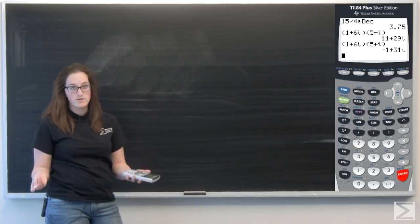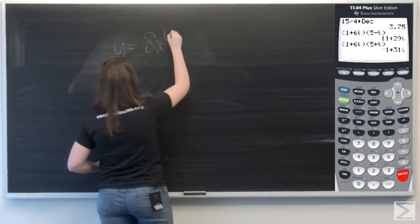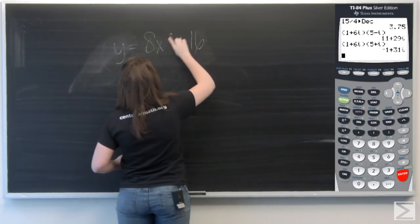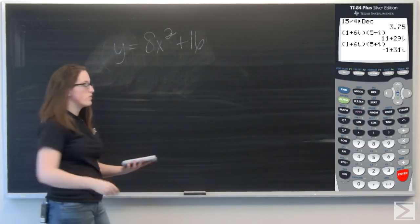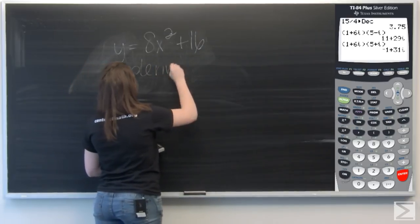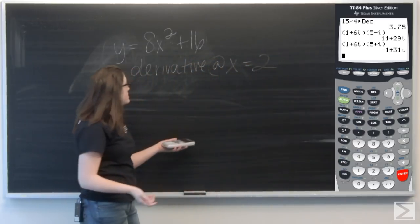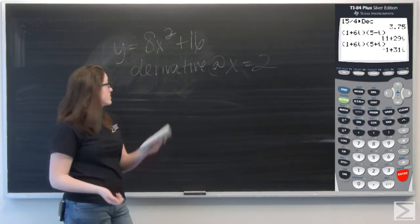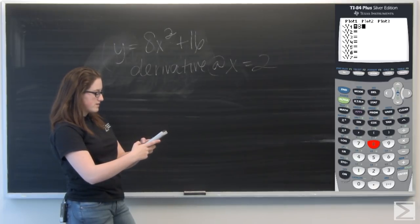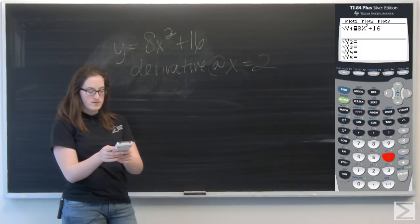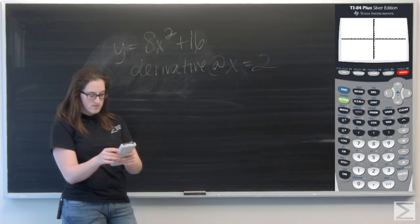Now for some more calculus based steps. So let's say I've got a function, 8x squared plus 16, for example. And I want to find the derivative at a given point. So I can differentiate by hand, plug in two for x. Or I can put this in my y1. So 8x squared plus 16. And then I can hit graph. And it's going to graph my function.